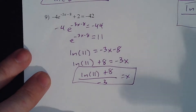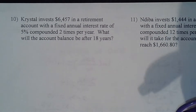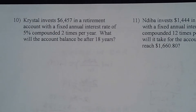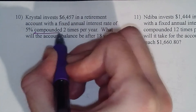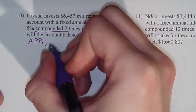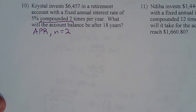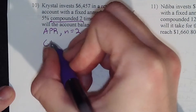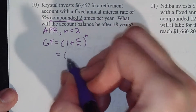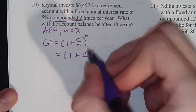Alright, moving on to the real questions — word problems! Crystal is investing $6,457 in a retirement account with a fixed annual interest rate of 5% compounded two times per year. What will the account balance be after 18 years? Technically this is a review problem from back in December, but I want to make sure we're on top of it. Compounded two times per year effectively means in our APR formula that n equals 2.